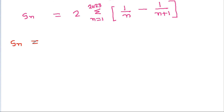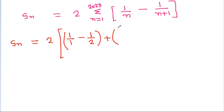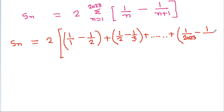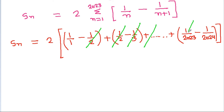So Sn equals 2 times: when n=1, we get 1/1 − 1/2; when n=2, we get 1/2 − 1/3; and when n=2023, we get 1/2023 − 1/2024. This is a telescoping series — 1/2 cancels, 1/3 cancels, and so on up to 1/2023 cancels.